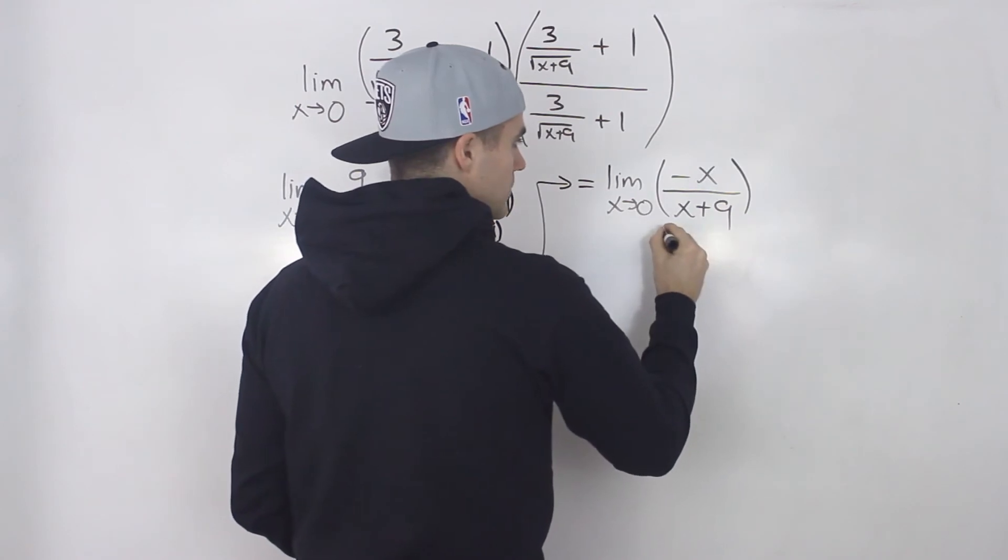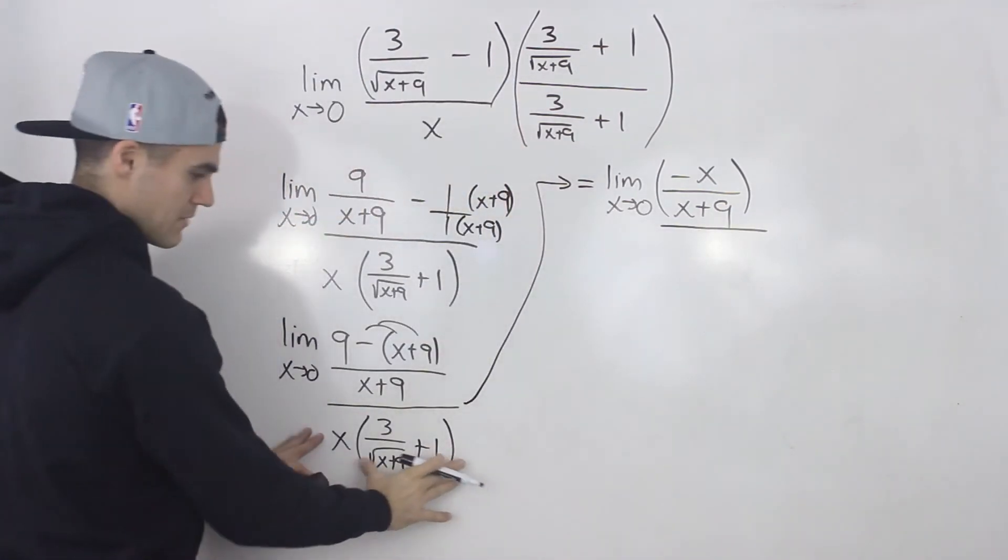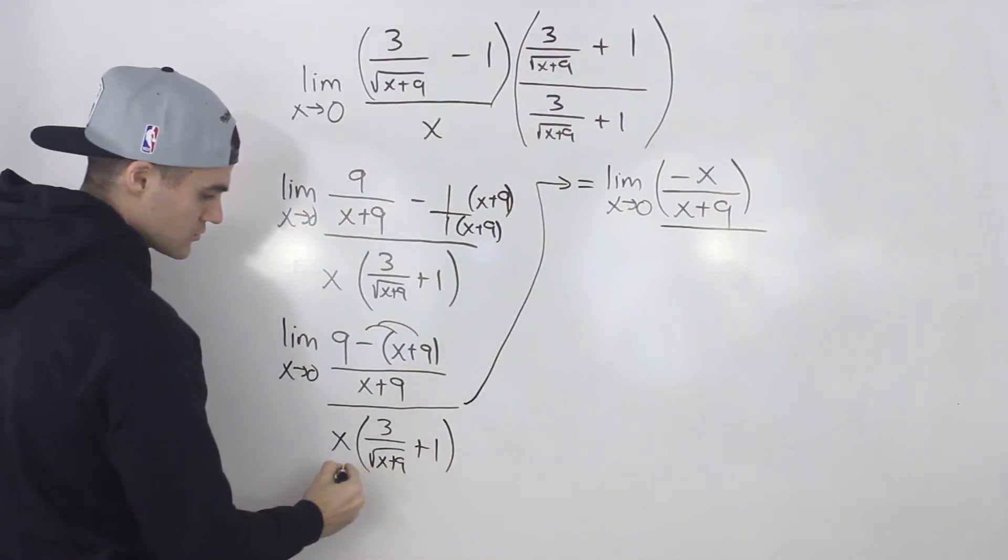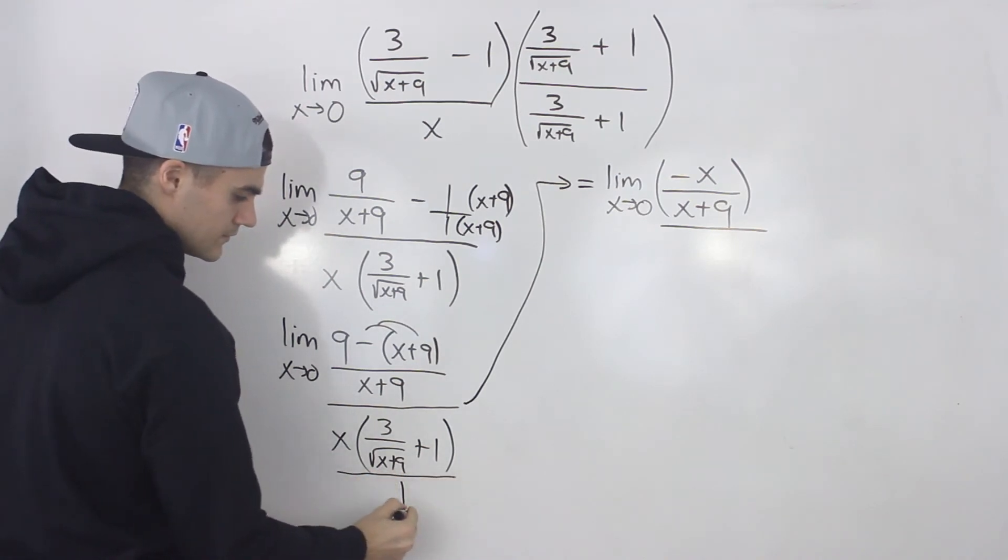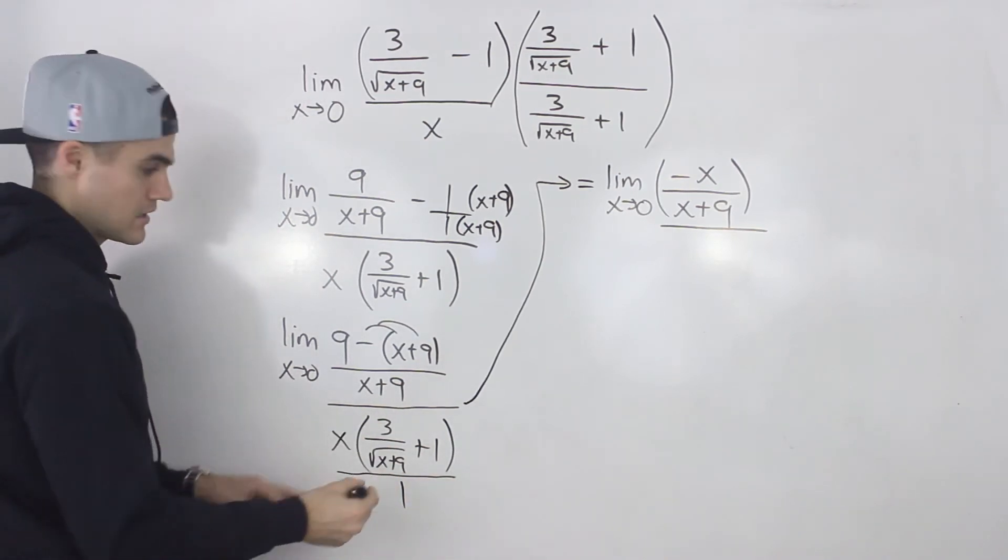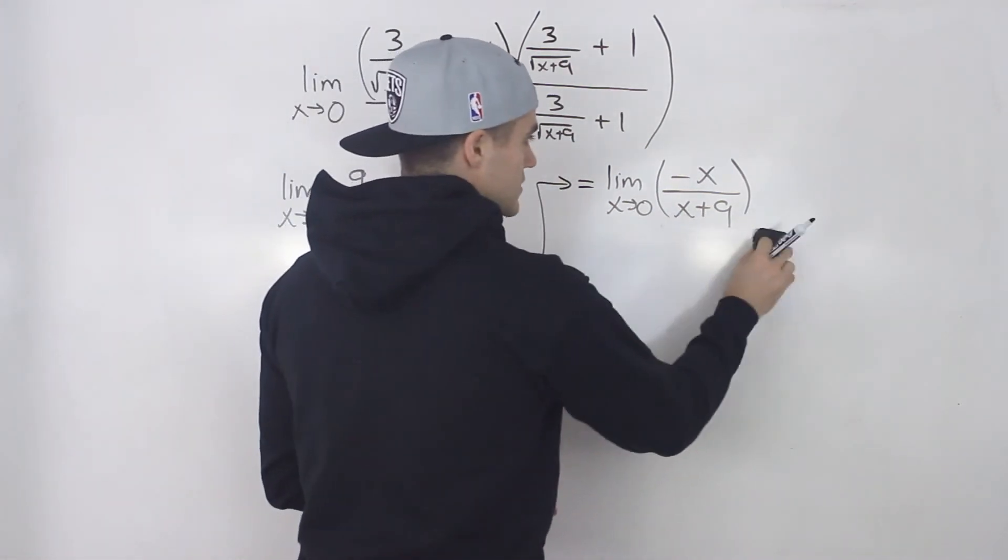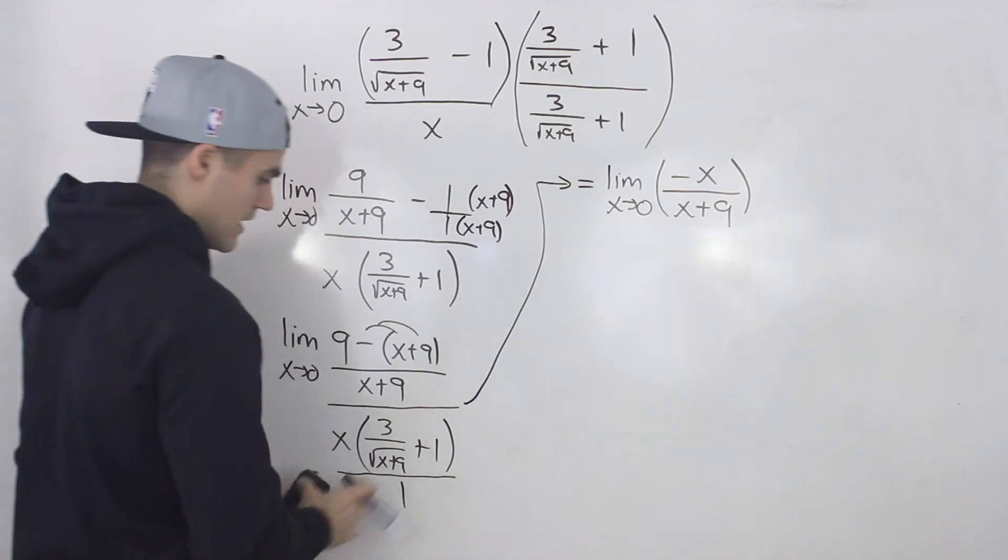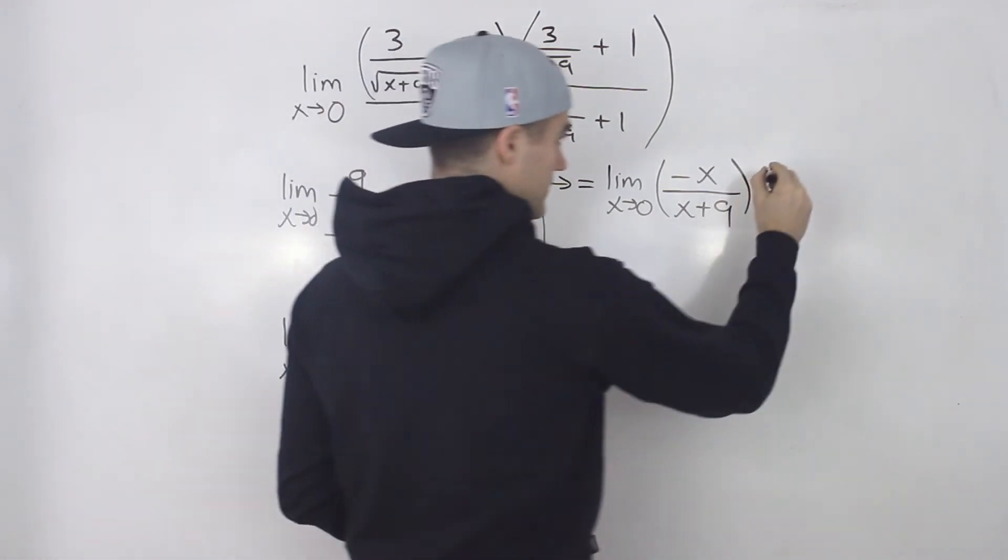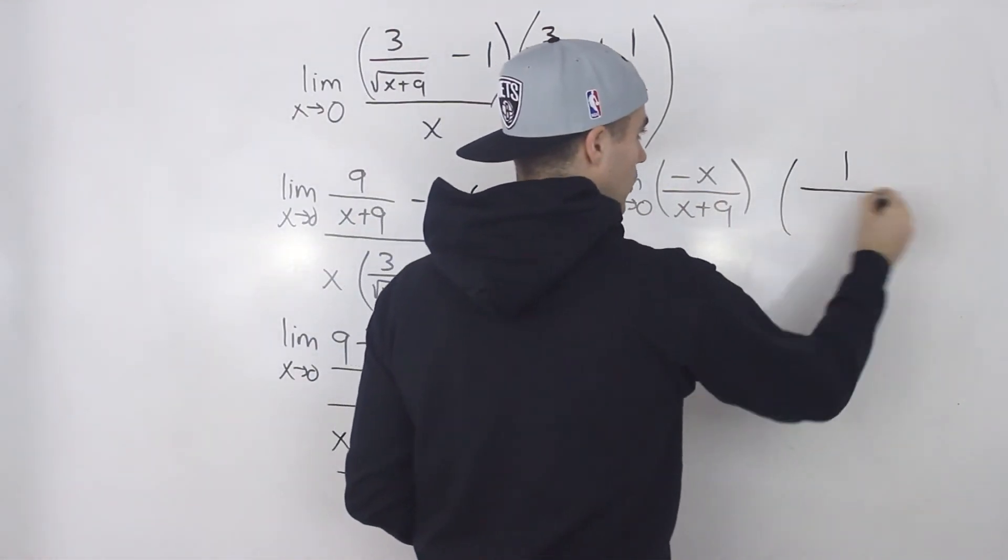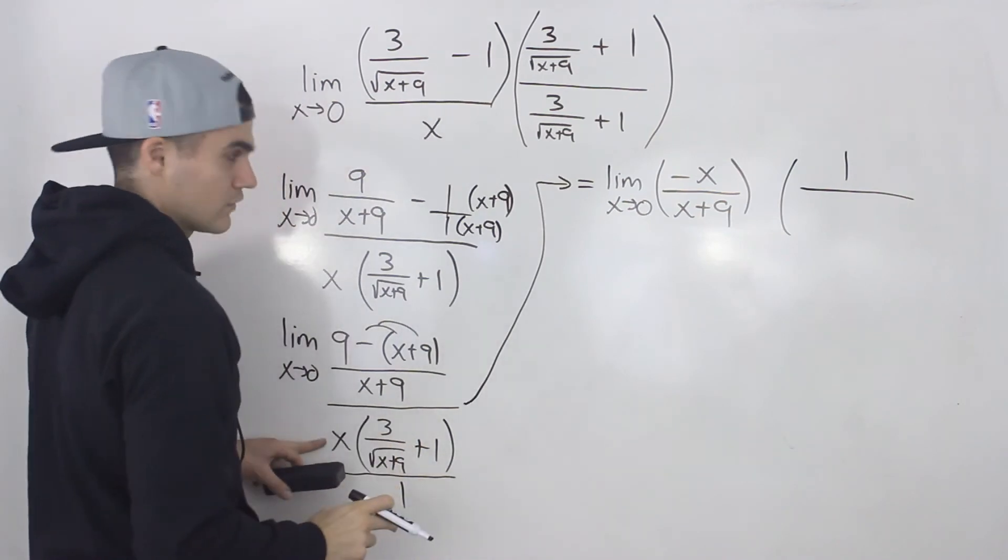And then we're still going to be dividing by this whole term here. Now this whole term is like over 1. So it's the same thing as multiplying by the reciprocal of this term. So instead of dividing it by this whole term, let's multiply it by 1 over all of this here.